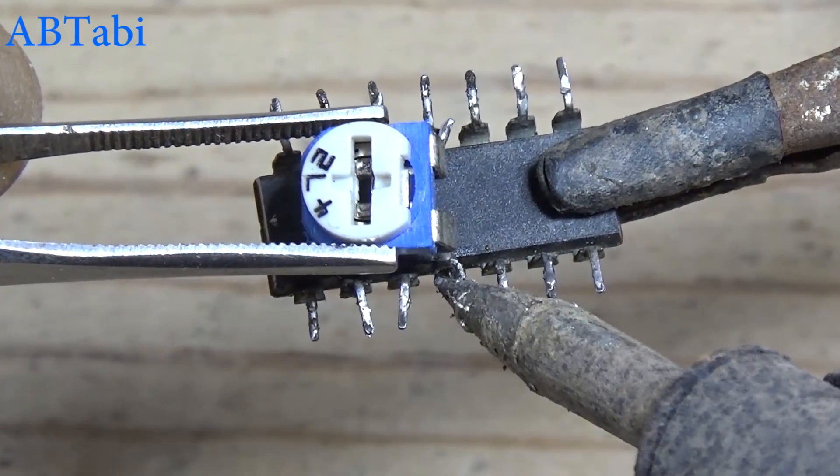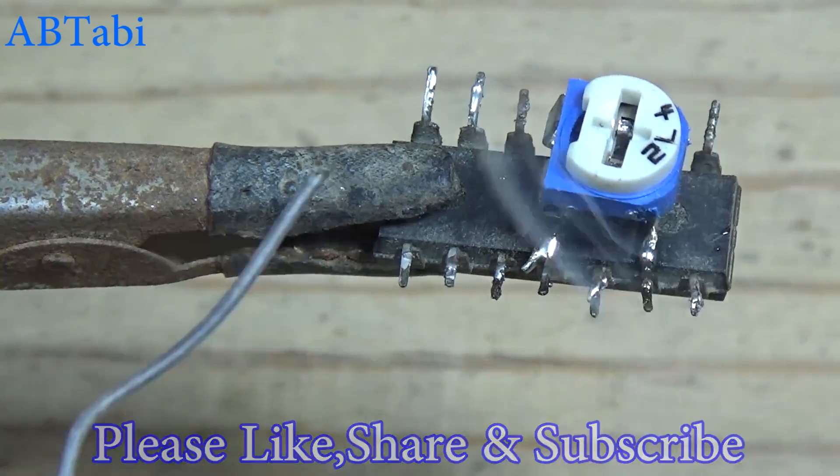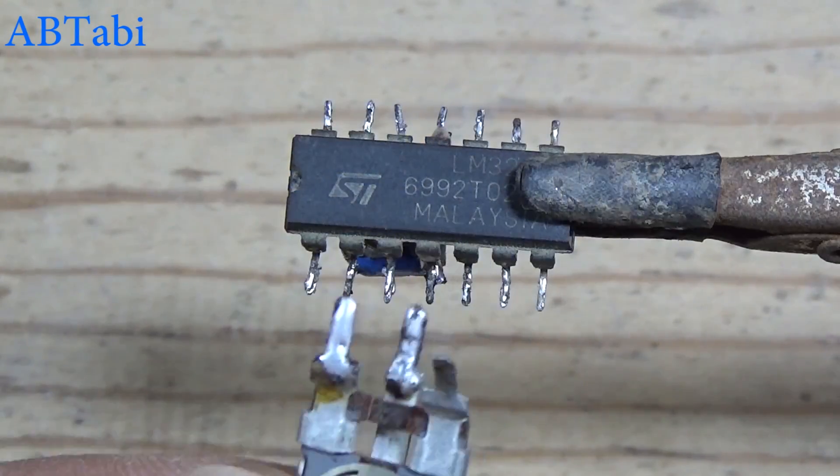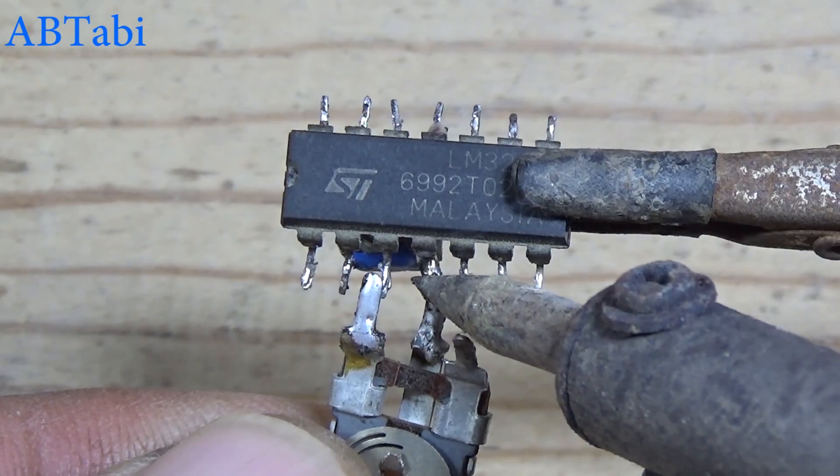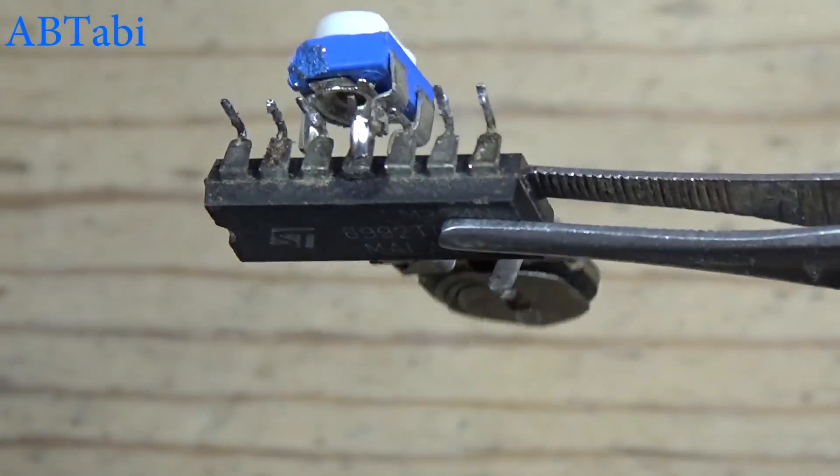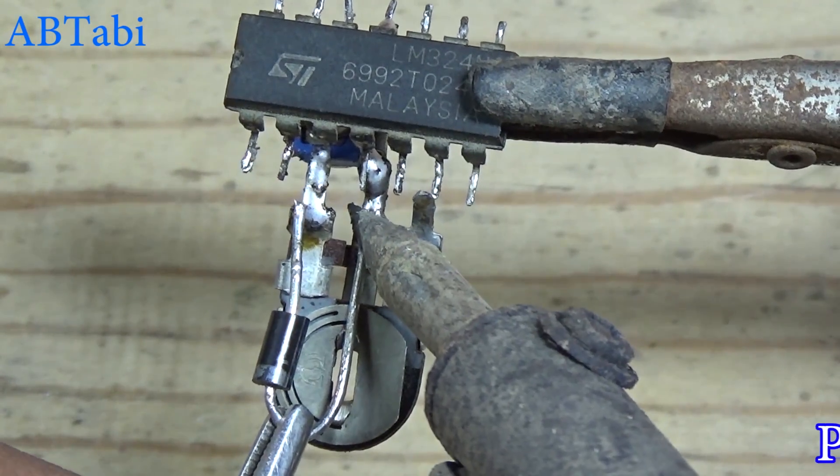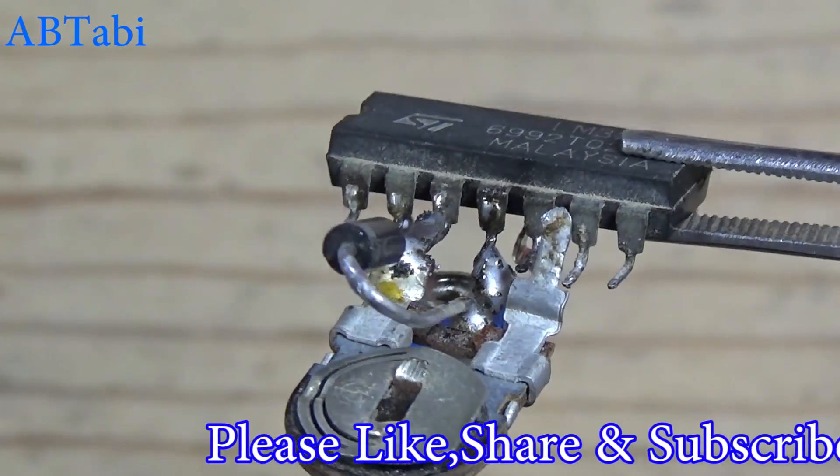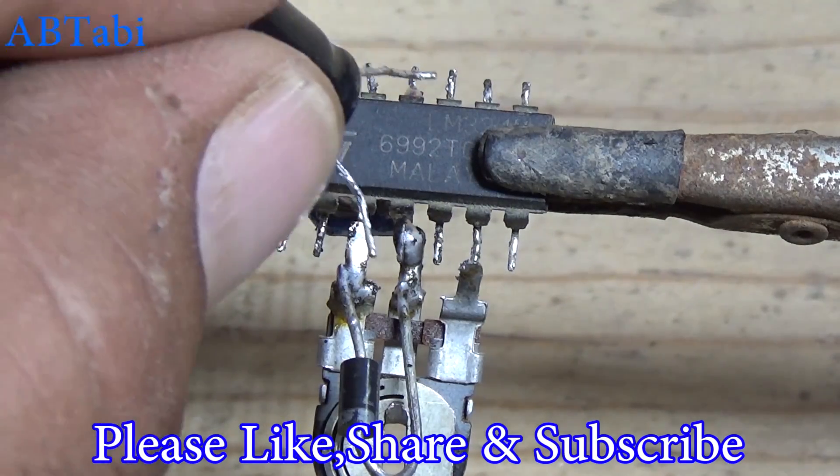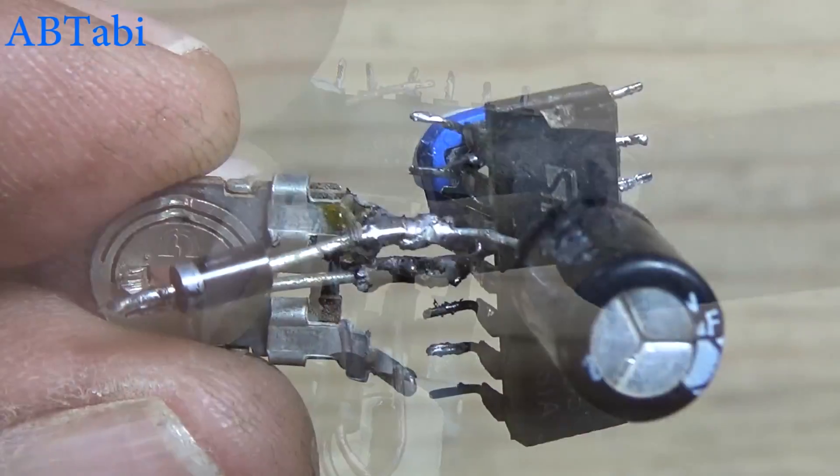1 million ohm resistor connects with IC pin 3 and 4. Diode connects with IC pin 3 and 4, but you must remember the diode anode and cathode. 100 UF capacitor connects with IC pin 3 and negative supply, hitting IC pin 11.